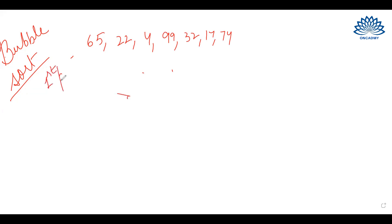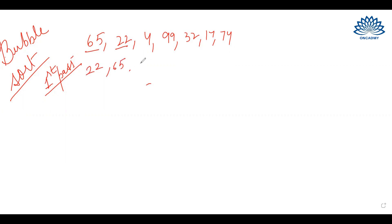In the first pass, what we will do? We will compare the first two elements. So we will compare 65 and 22. Which one is smaller? 22. So we will swap them. 22 will come here and 65 will come here. The rest of the elements will remain the same.